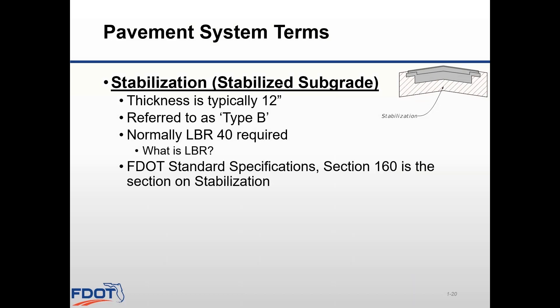The stabilized subgrade is a structural layer that is 12 inches thick and serves as a working platform to permit efficient construction of the base material. It's generally bid as type B stabilization LBR 40, with the contractor selecting the approved materials necessary to achieve the LBR 40 value. LBR stands for lime rock bearing ratio — it's a lab test used to determine the bearing value of soils when compacted at different moistures ranging from the dry to the wet side of optimum moisture. It's used for evaluating lime rock and other soils used for base or stabilized subgrade material in Florida. The specification for stabilization is found in section 160.